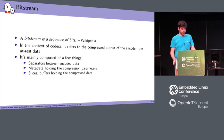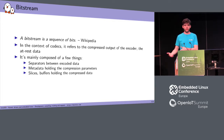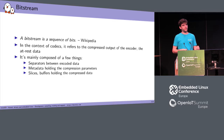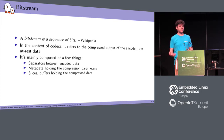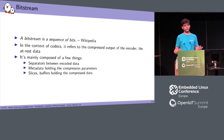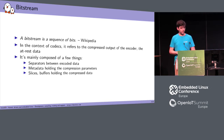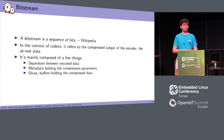The bitstream is mainly composed of three things. First, a separator between frames so that by reading the stream of bits you can tell when a frame starts and stops. Then the metadata, which holds the compression parameters — for example, references to images used as references to compress that image. And finally, things called slices, which are basically the compressed output directly — the actual data.